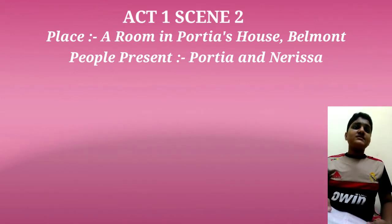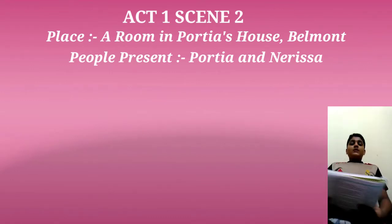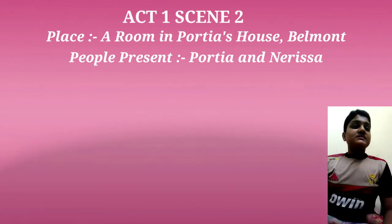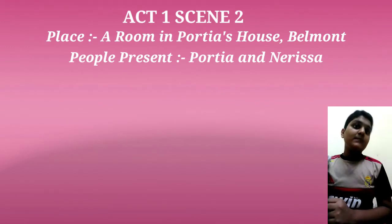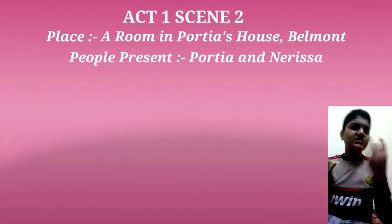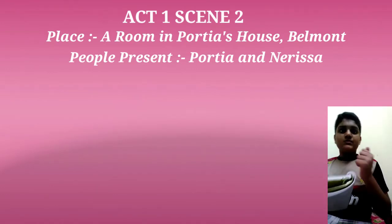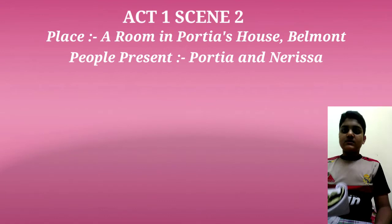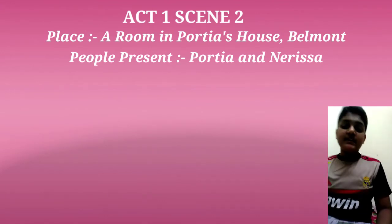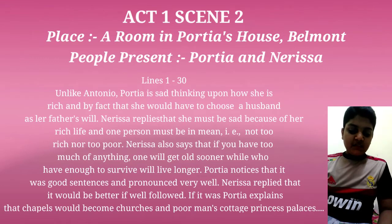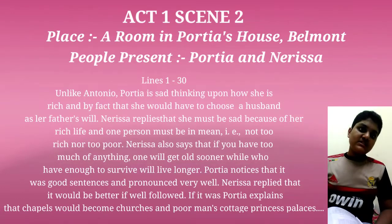So, Merchant of Venice Act One Scene Two. This scene takes place in a room in Portia's house in Belmont. Portia is a rich heiress living in a place called Belmont. The characters are Portia and Nerissa, who is Portia's maid or lady-in-waiting. We'll discuss lines 1 to 30.